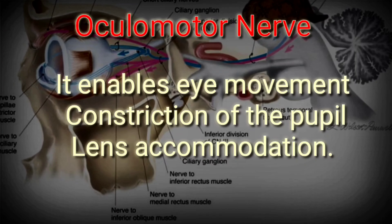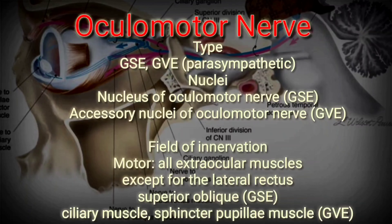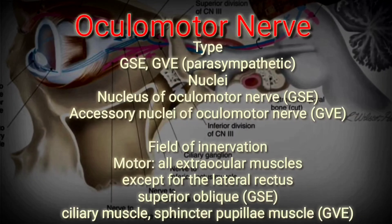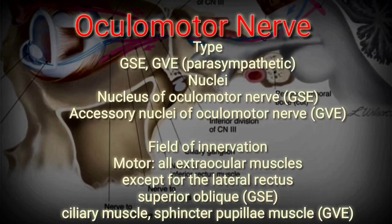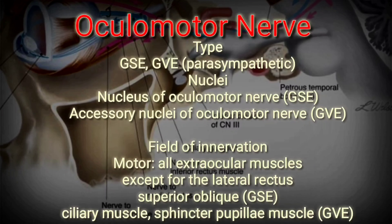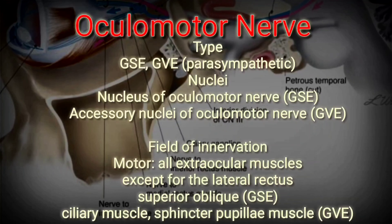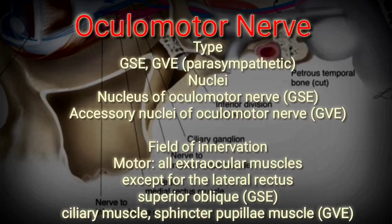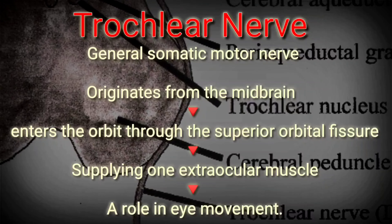Type: GSE and GVE (parasympathetic). Nuclei: nucleus of the oculomotor nerve (GSE) and accessory nucleus of the oculomotor nerve — Edinger-Westphal (GVE). Field of innervation: motor — all extraocular muscles except the lateral rectus and superior oblique (GSE); ciliary muscle and sphincter pupillae muscle (GVE).